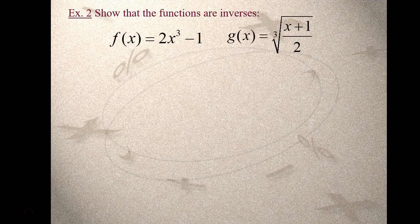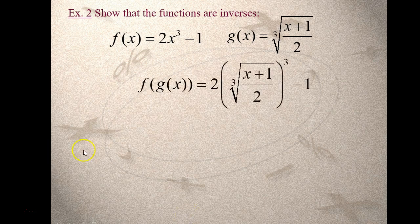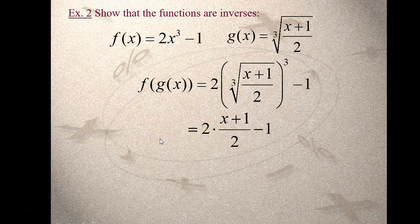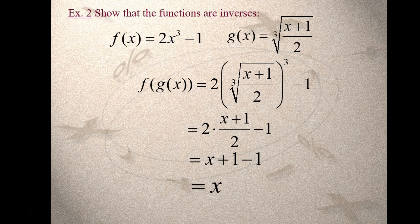Let's try another one: f of x equals 2x cubed minus 1, and g of x equals the cube root of x plus 1 over 2. Starting with f of g of x: f is the outer function, so I've got 2 times parentheses cubed minus 1. Inside the parentheses I put g of x. When you cube a cube root, the radical goes away and you're left with what's under the radical. The 2s cancel out, and I'm left with x plus 1 minus the 1 on the outside, so the 1s cancel and I'm left with x. So f composition g gave me x.